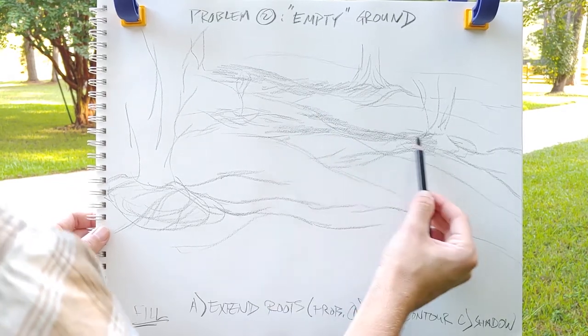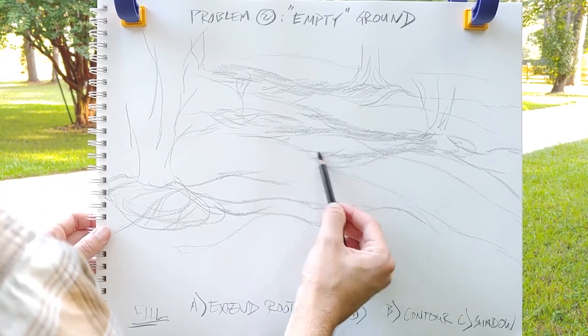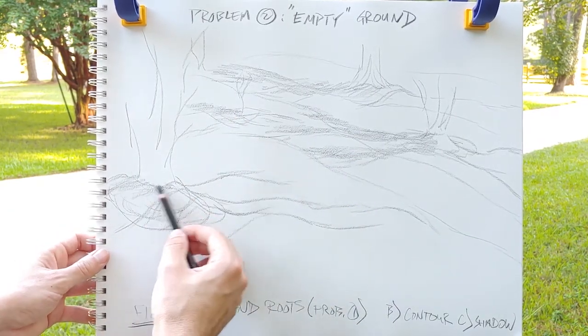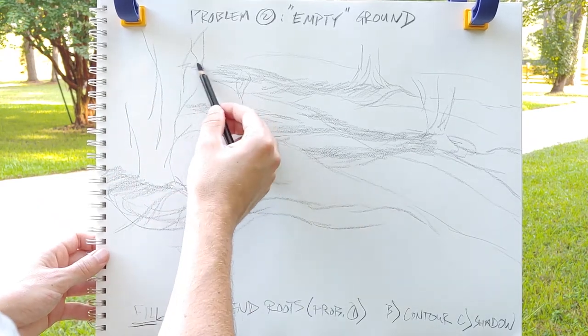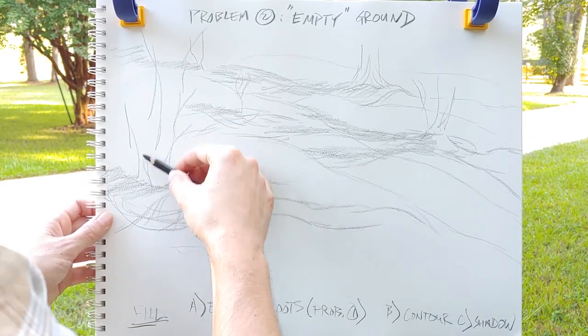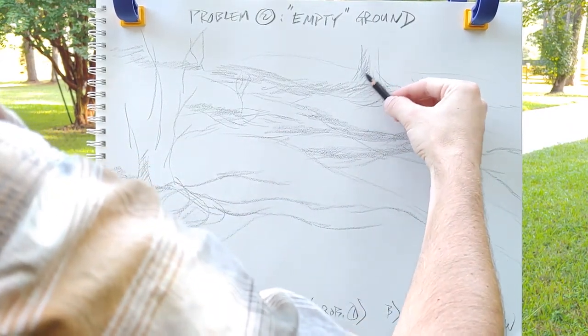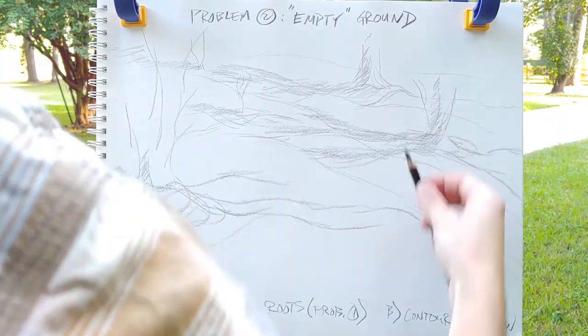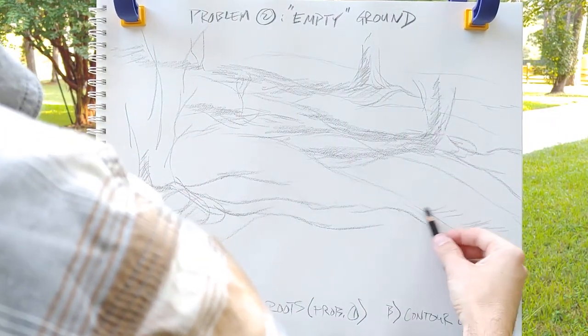When you get into shadows, you can start to really get some emphasis going because you can relate those shadows to the roots and to the cross contours. You can bring shadows that are actually coming in from trees that are off of the format and bring those shadows onto it so there's another presence beyond the edge of the page.